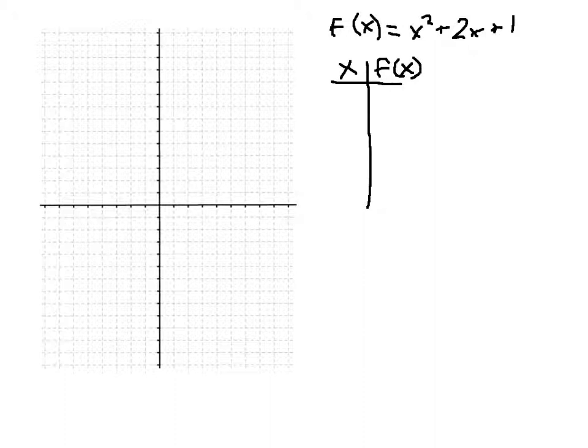We also saw that some parabolas, depending where they are and whether they open up or down, will have two x-intercepts, one x-intercept, or zero. We also mentioned that this is going to relate to the discriminant of that quadratic function.